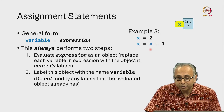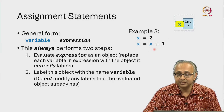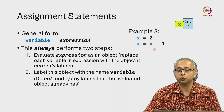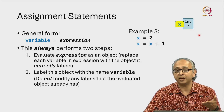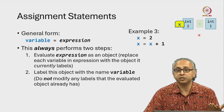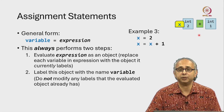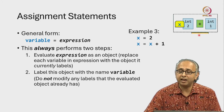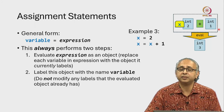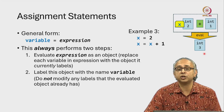When we are trying to evaluate the right hand side, x evaluates to this object. Then we have the other object, integer 1, and the plus operator between them. We go ahead and evaluate this and it results in the integer object 3.